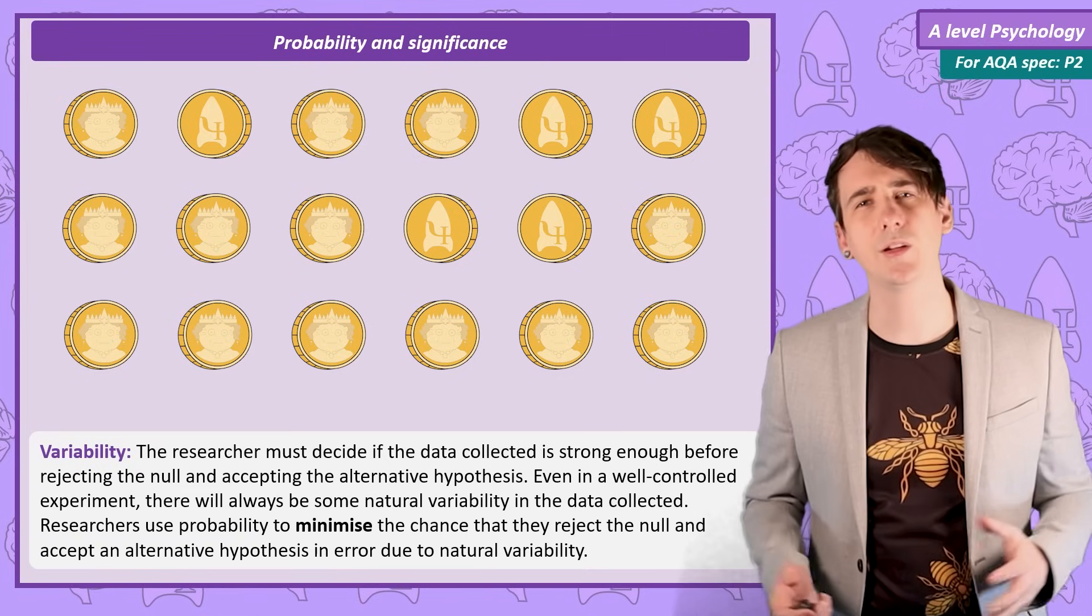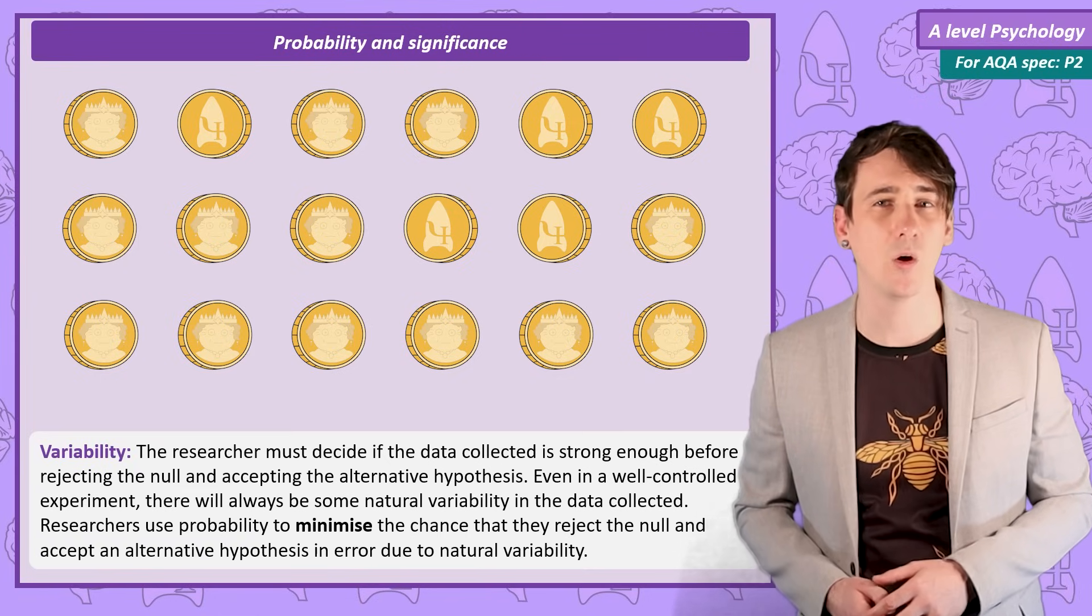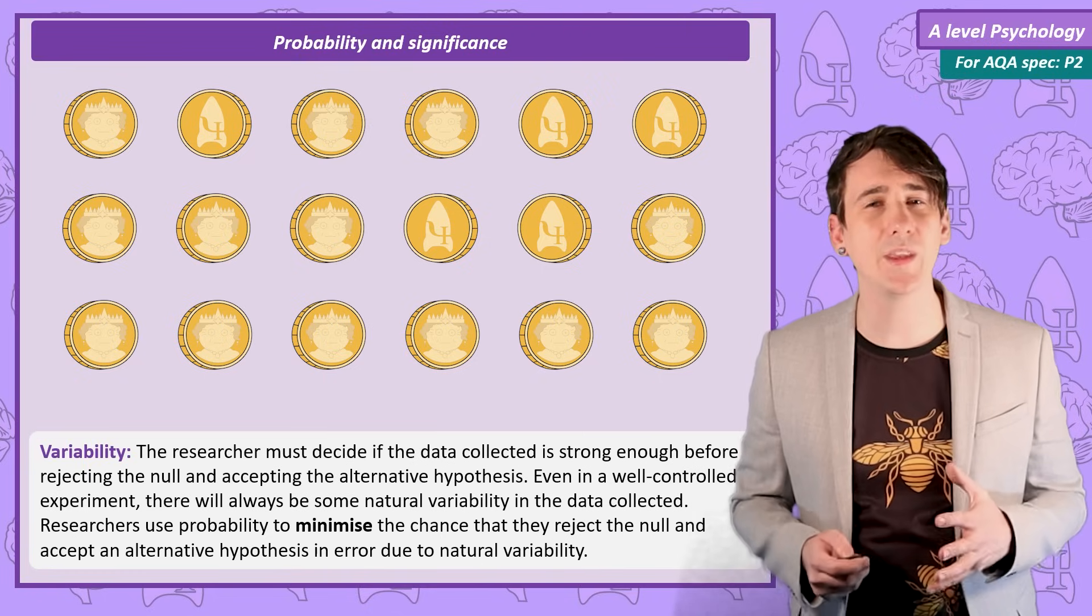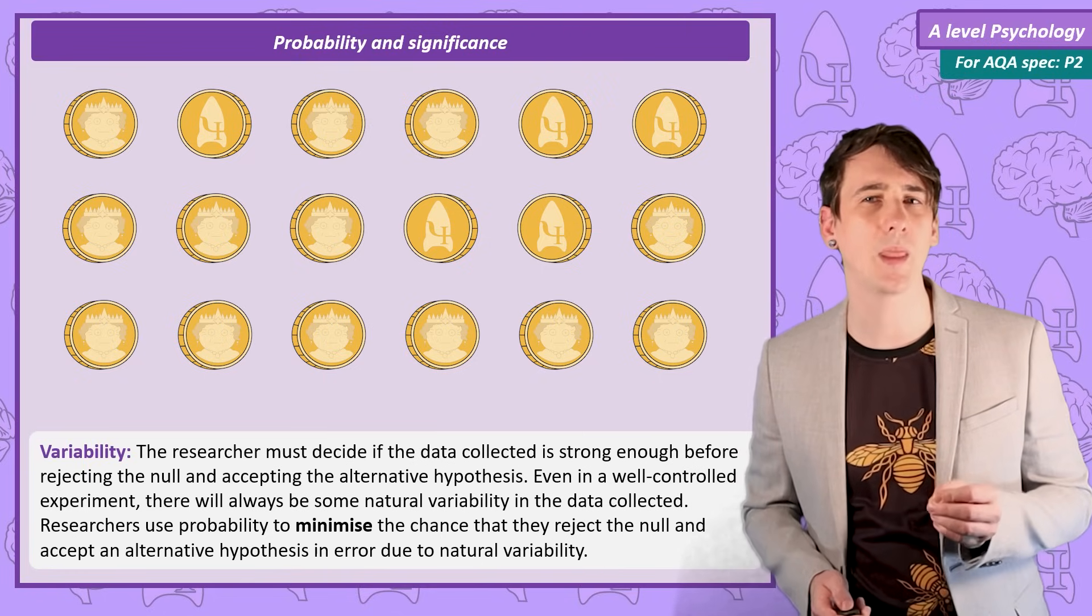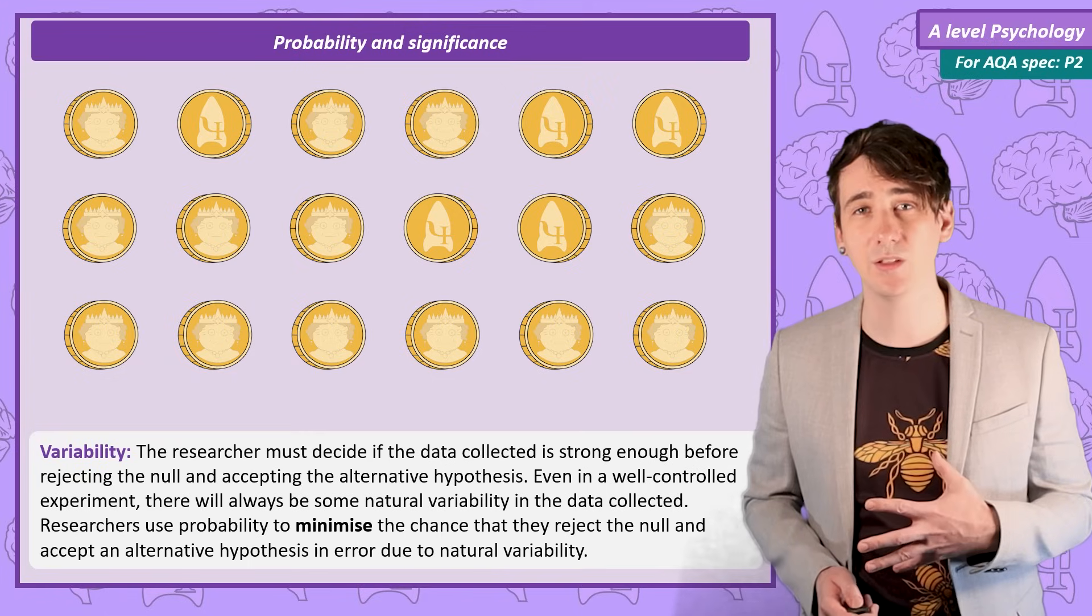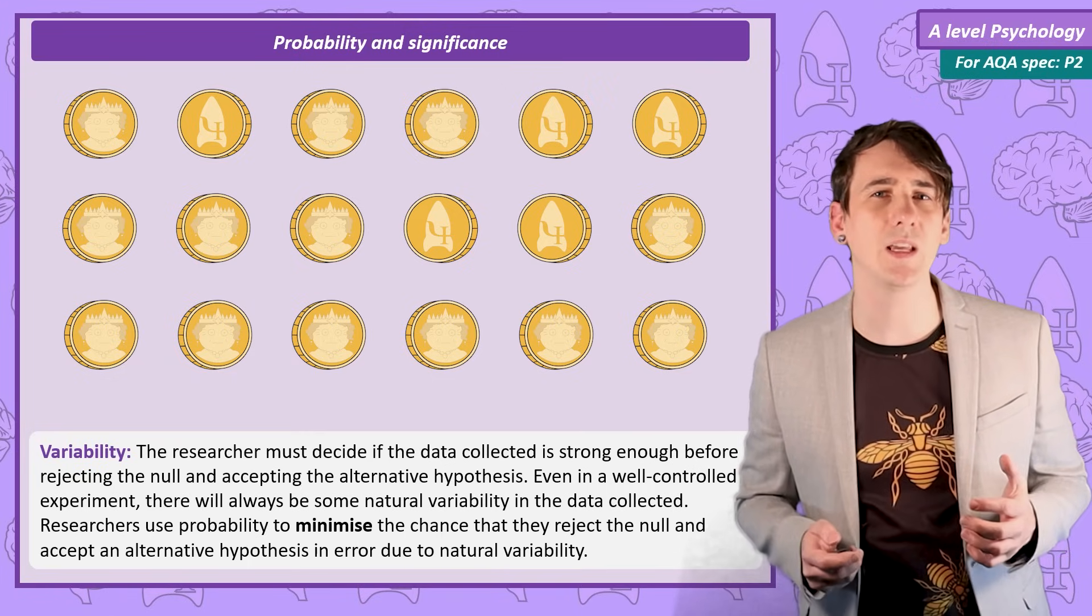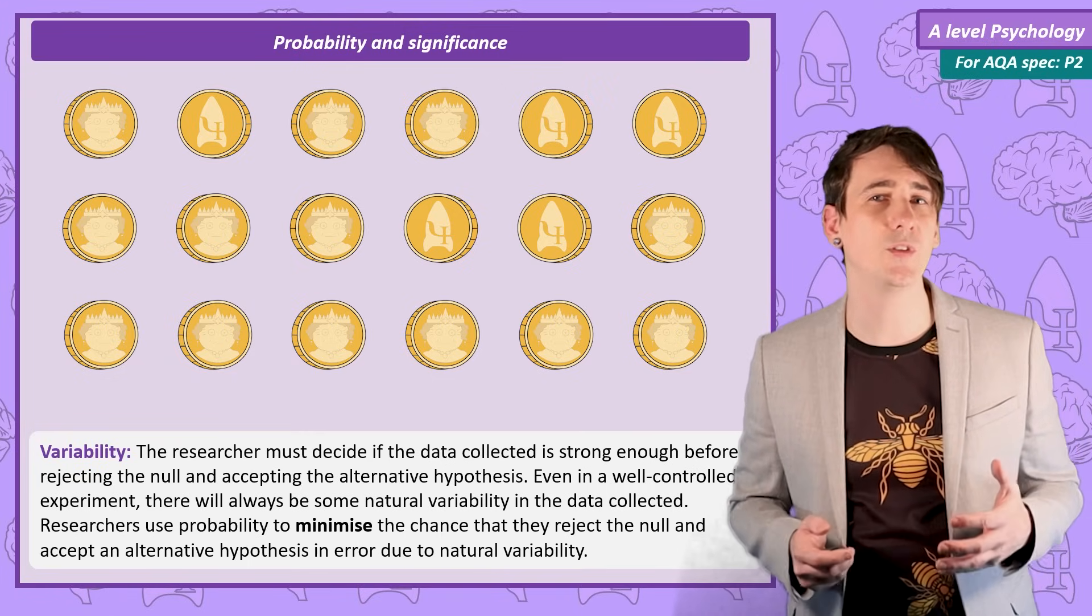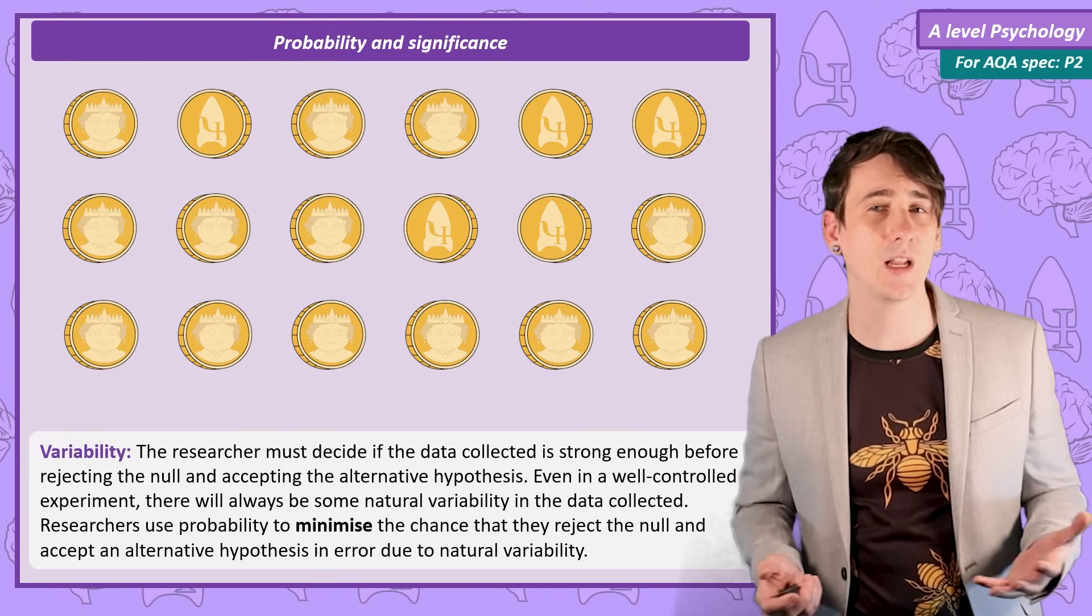If we can agree that the data I showed you on light and recall isn't strong enough to accept the alternate hypothesis, we can ask ourselves, when would the data be strong enough? At what point would the difference in recall shown by the participants in our study convince us to accept the alternate hypothesis? Even if the data is stronger, if the difference between individual scores could be due to chance, we are always going to have some doubts.